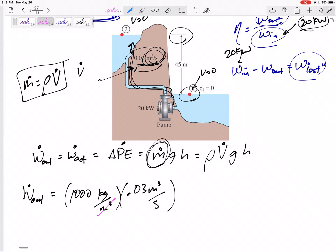Rho of water is 1,000 kilograms per meter cubed. The V dot is 0.03 meters cubed per second. Do you see how the units there just gave us M dot, right? Kilograms per second. The G is 9.81 meters per second squared. The height is 45 meters.